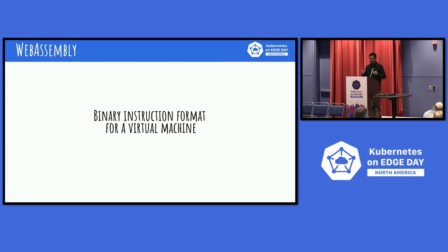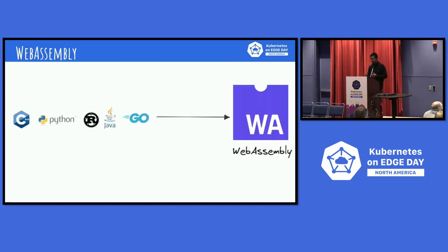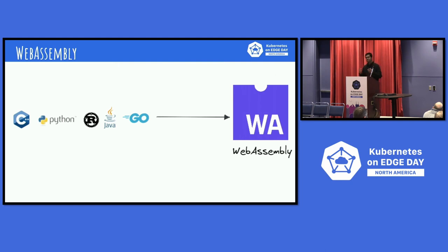At the bare minimum, WebAssembly is essentially a binary instruction format designed as a compilation target. You can take functions written in multiple programming languages — like C, C++, Python — whether a systems language or an object-oriented programming language — and compile them down into this binary instruction format that can run across a host of different devices. It started as a browser technology, but we've quickly realized it can run very efficiently on Edge devices and server side as well. You're seeing a lot of cloud-native WebAssembly these days running on serverless functions, on Kubernetes, and on Edge.